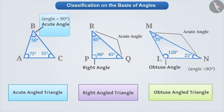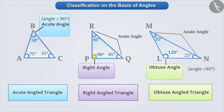Triangles in which all angles are acute angles are called acute angle triangles. Triangles with one right angle are called right angle triangles. Remember that the right angle of a right angle triangle is represented with a small square symbol. Therefore, if an angle in a triangle is given like this, then you can easily identify that triangle as a right angle triangle. Similarly, triangles in which one angle is an obtuse angle are known as obtuse angle triangles.